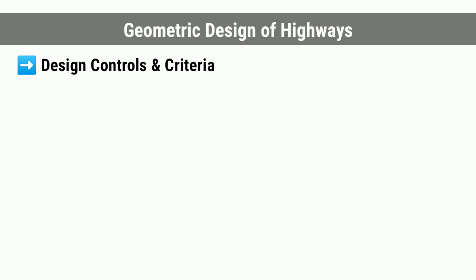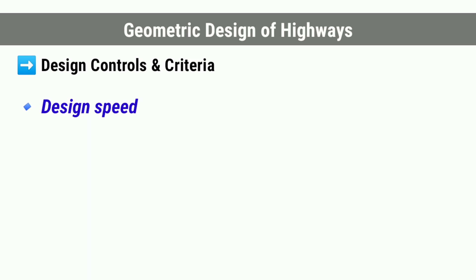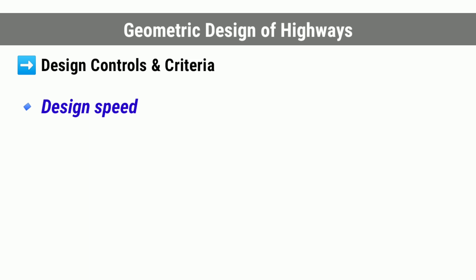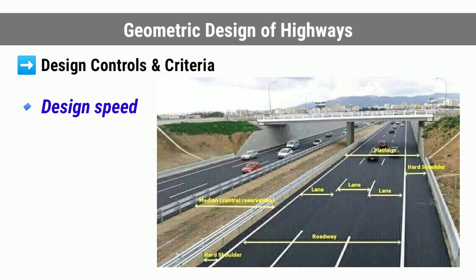The geometric design of highways depends on several design factors. The important factors which control the geometric elements are design speed. The design speed is the most important factor controlling the geometric design elements of highways. Design of almost every geometric design element of a road is dependent on the design speed. For example, the requirements of the pavement surface, surface characteristics, the cross-section elements of the road such as width and clearance requirements, and the sight distance requirements are decided based on the design speed of the road.